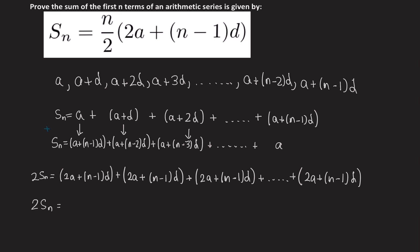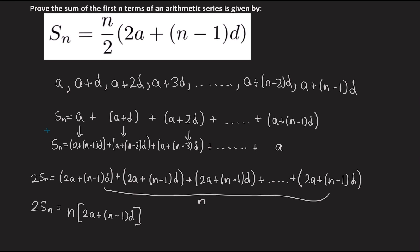We can tidy this up: 2Sn equals this same term repeated. We're getting it n times, so we can factorize: 2Sn equals n lots of (2a plus (n minus 1)d). Dividing both sides by 2, we get Sn equals n over 2 times (2a plus (n minus 1)d), which is exactly the answer we wanted.